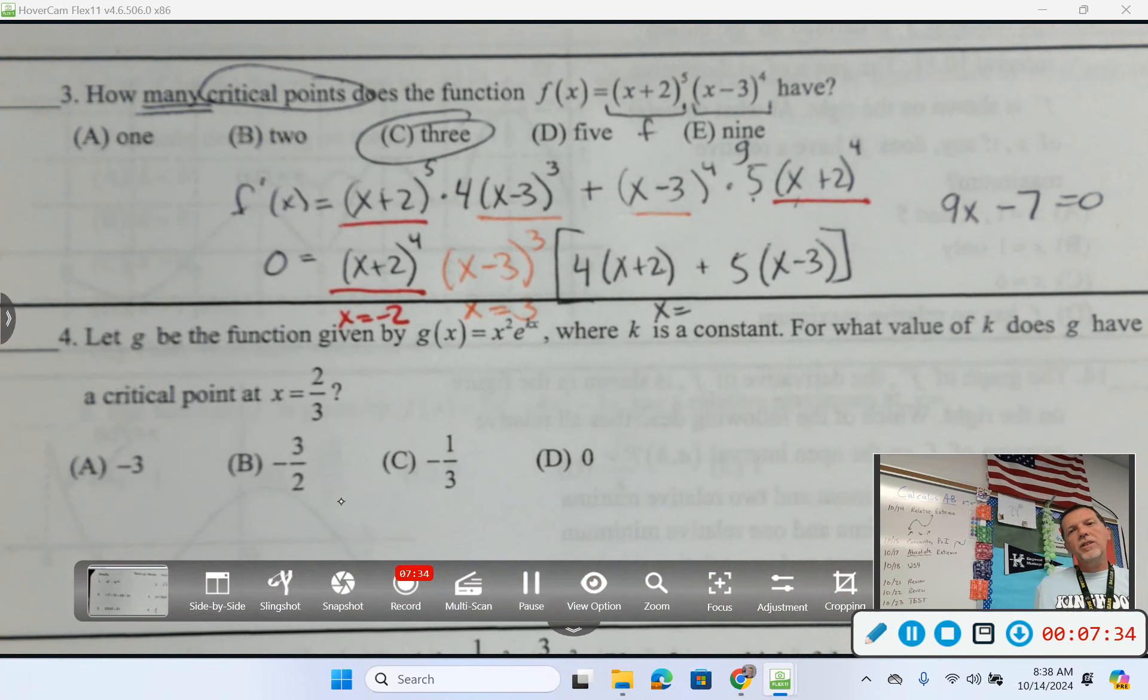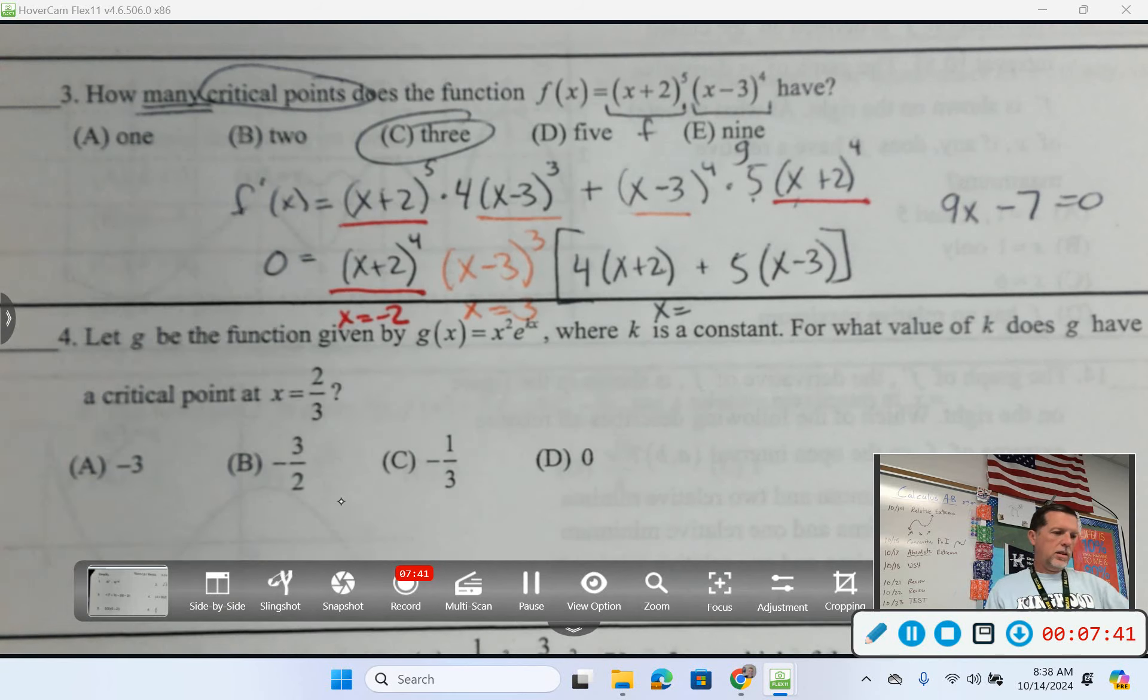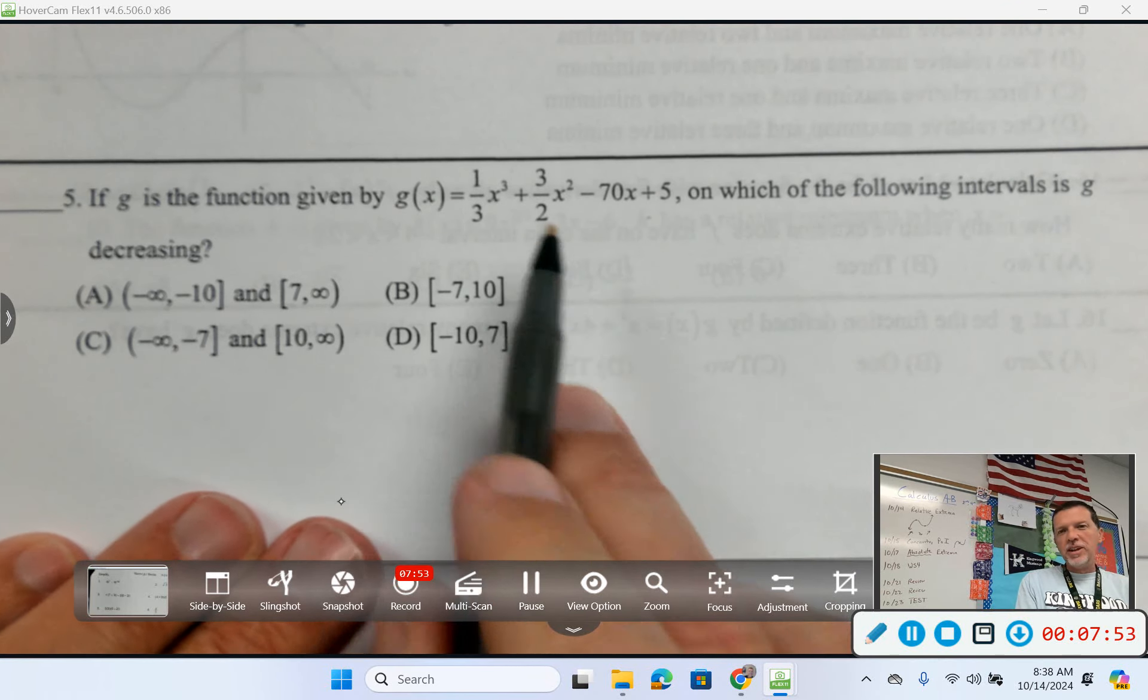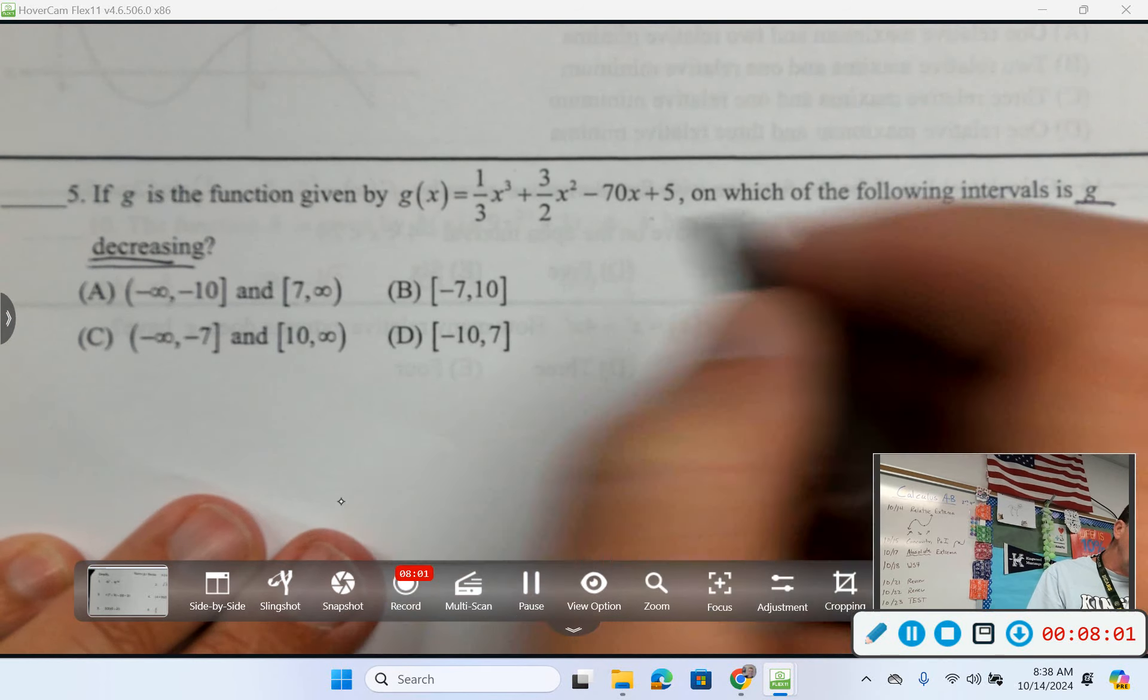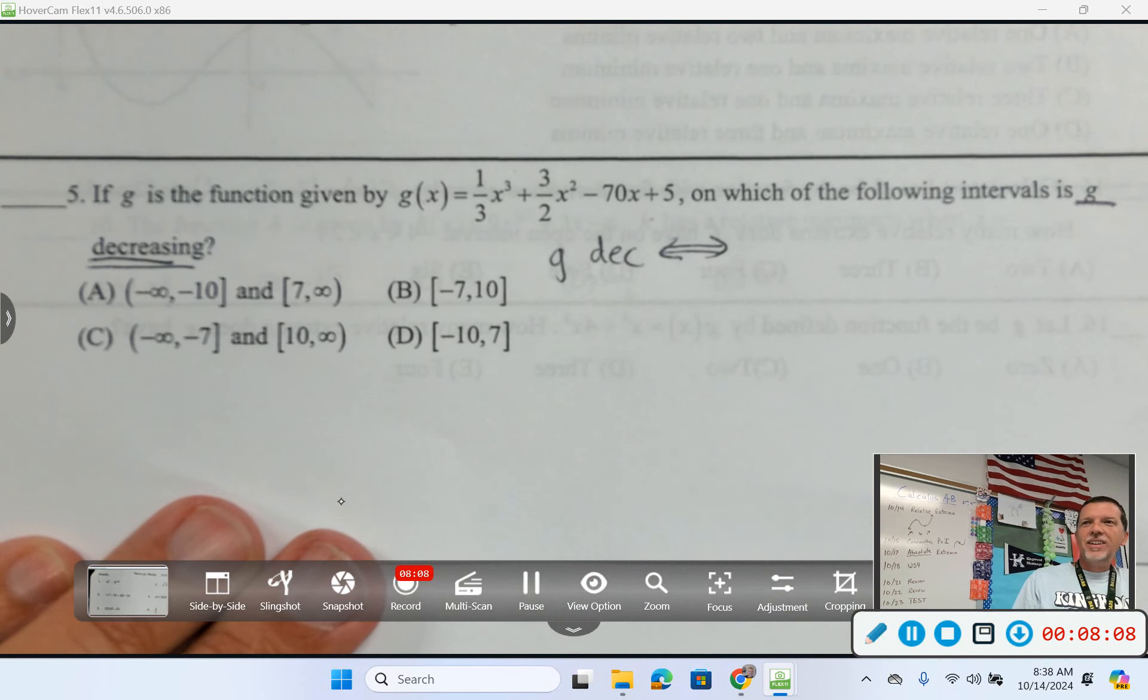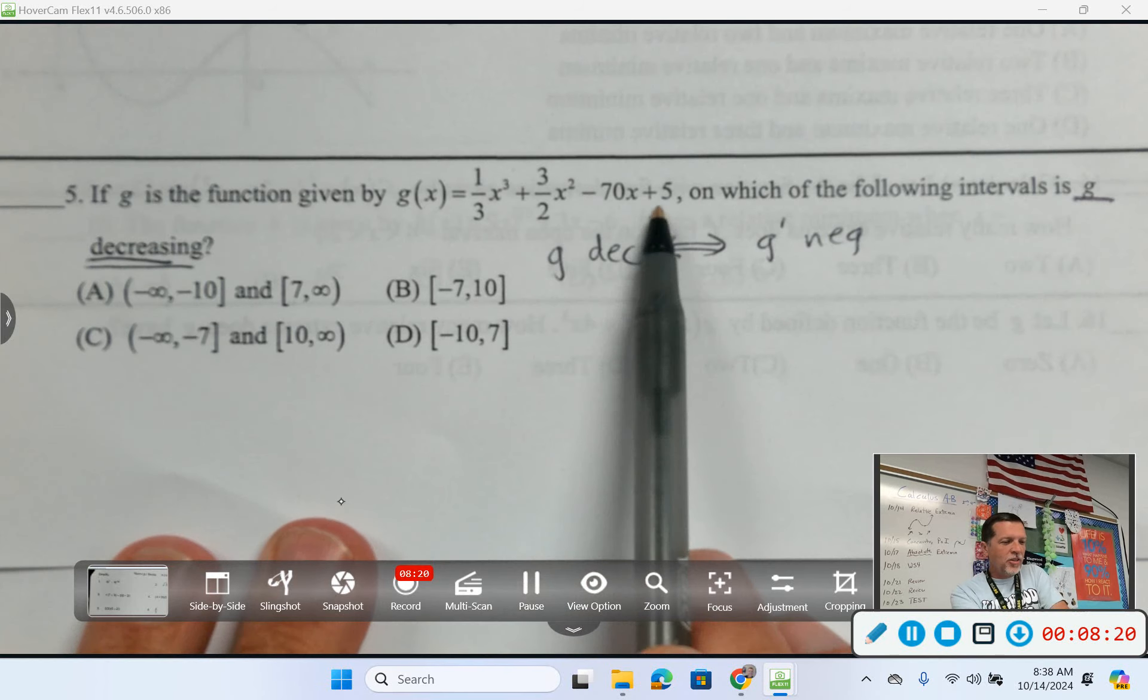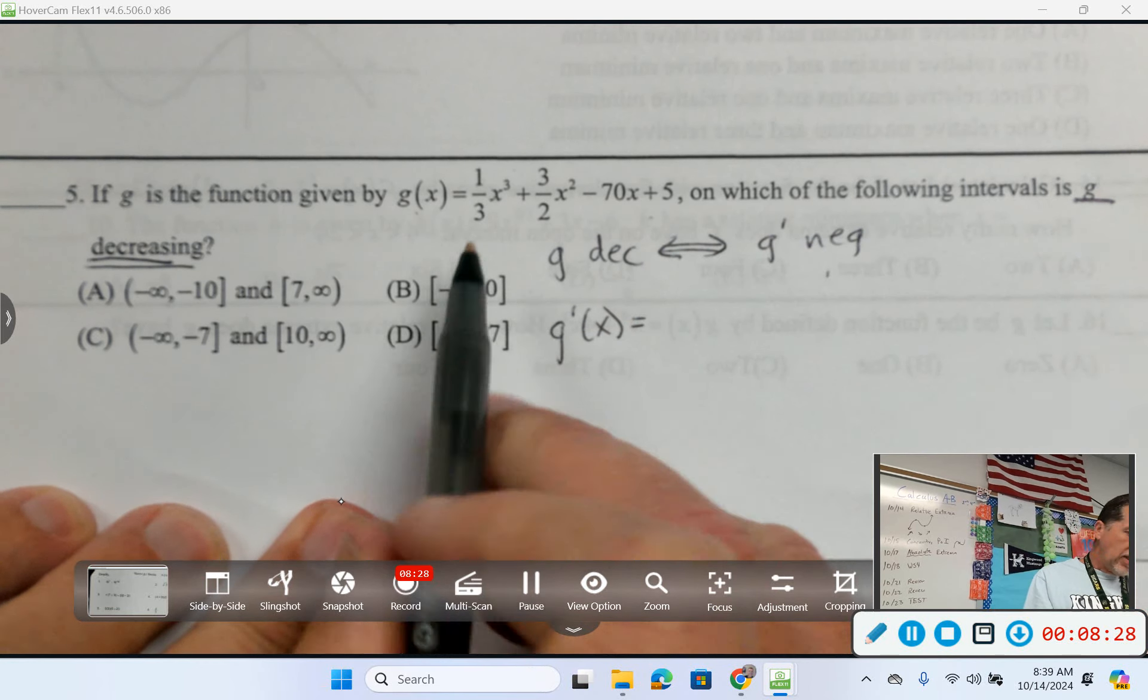So a couple of review points on that question. Critical points, f prime equals 0. To find f prime, we had to use the product rule, and then we had a whole bunch of algebra after that. Number five. If g is the function given by that thing, which kind of looks ugly with the fractions, but maybe when we take a derivative it gets easier. On which of the following is g decreasing? So what am I looking for to know where g is decreasing? What's negative? G prime is negative.